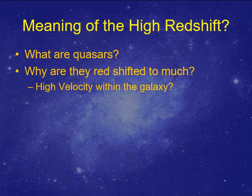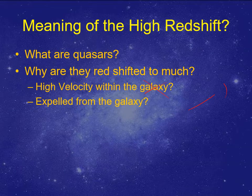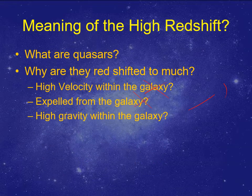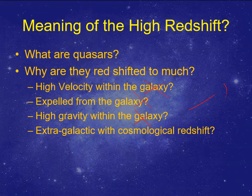One thing they used to think was that maybe these are objects being spit out of our galaxy. In the 1960s when the first Star Trek series came out, some still thought quasars might be things kicked out of our galaxy — the Starship Enterprise was even investigating a quasar-like object at one point. It turns out that's not what's happening. Maybe something in our galaxy has super high gravity, causing a high redshift — but that's been ruled out too.